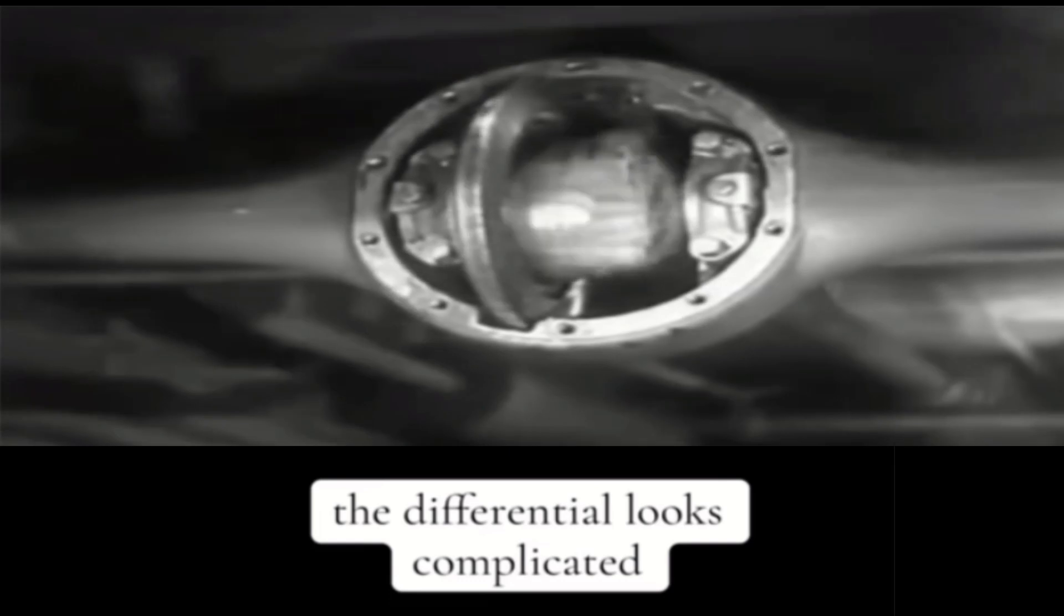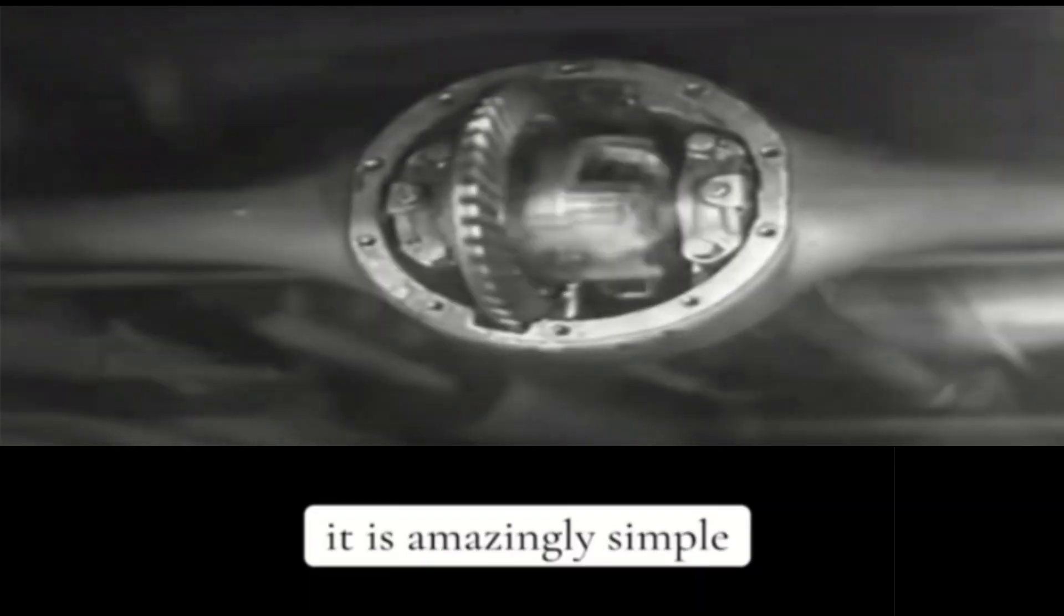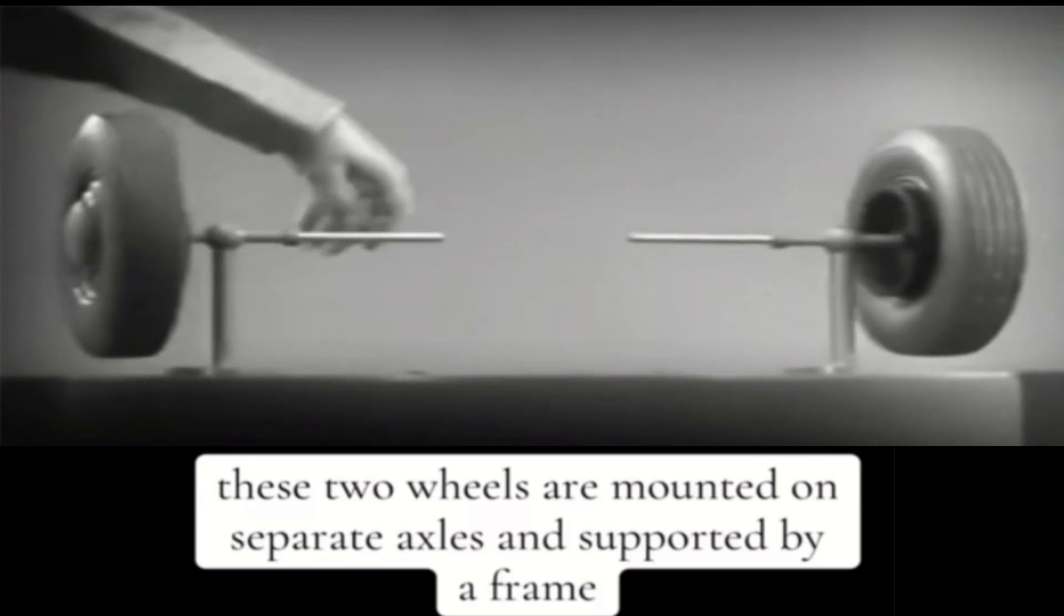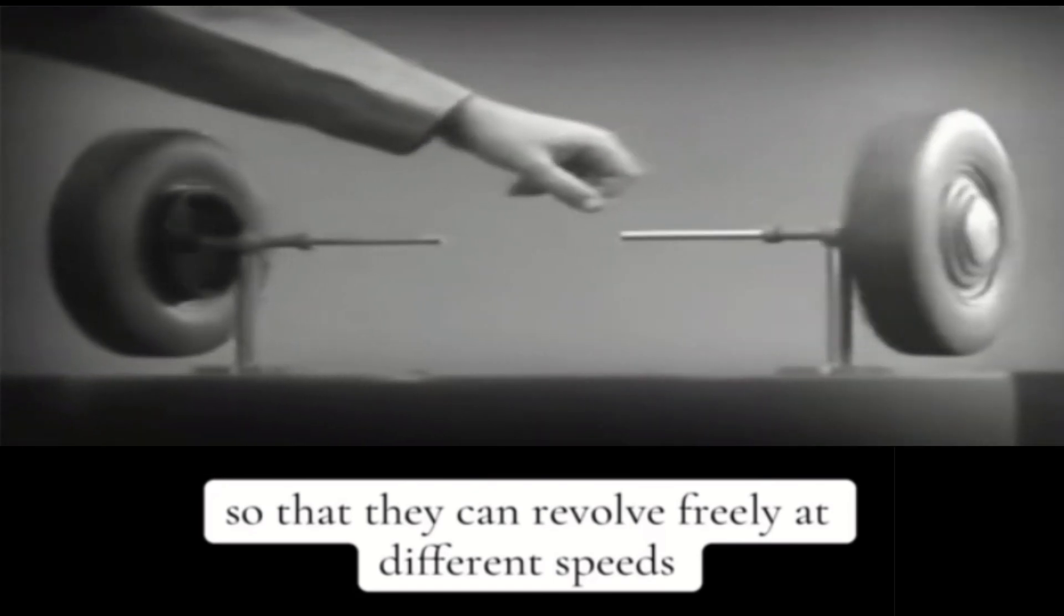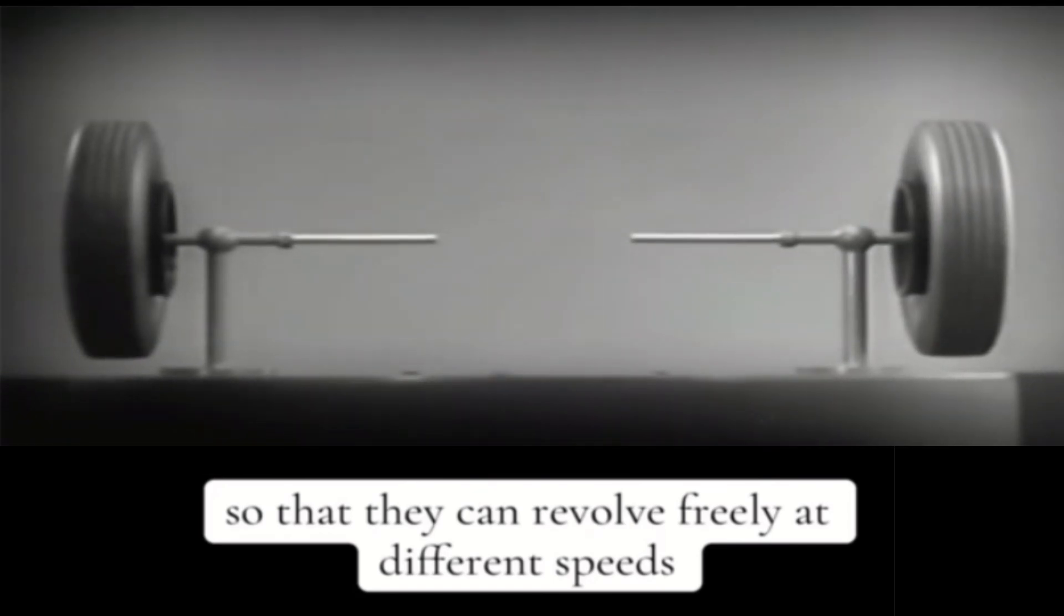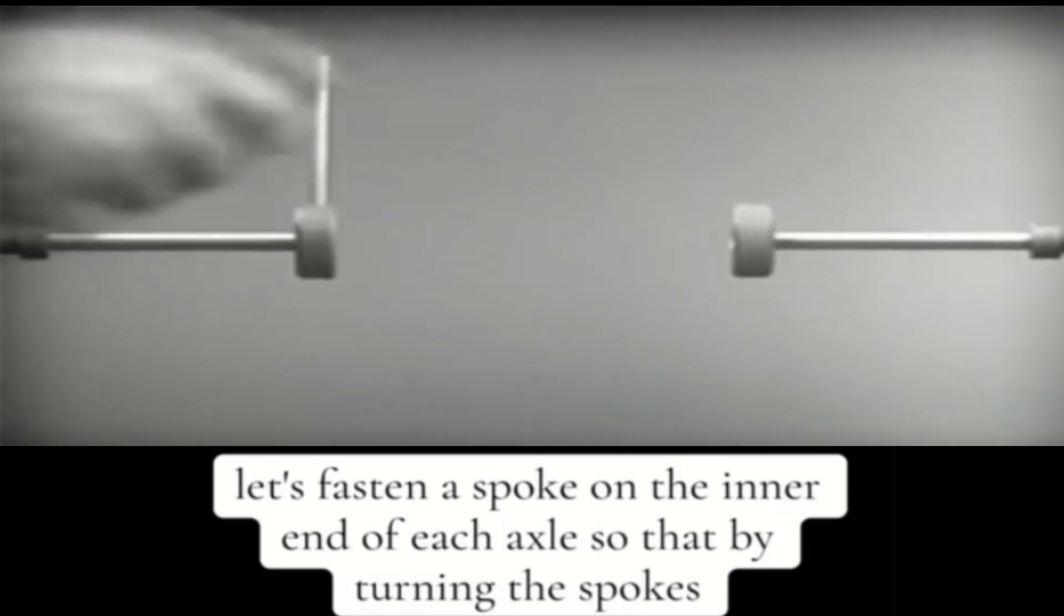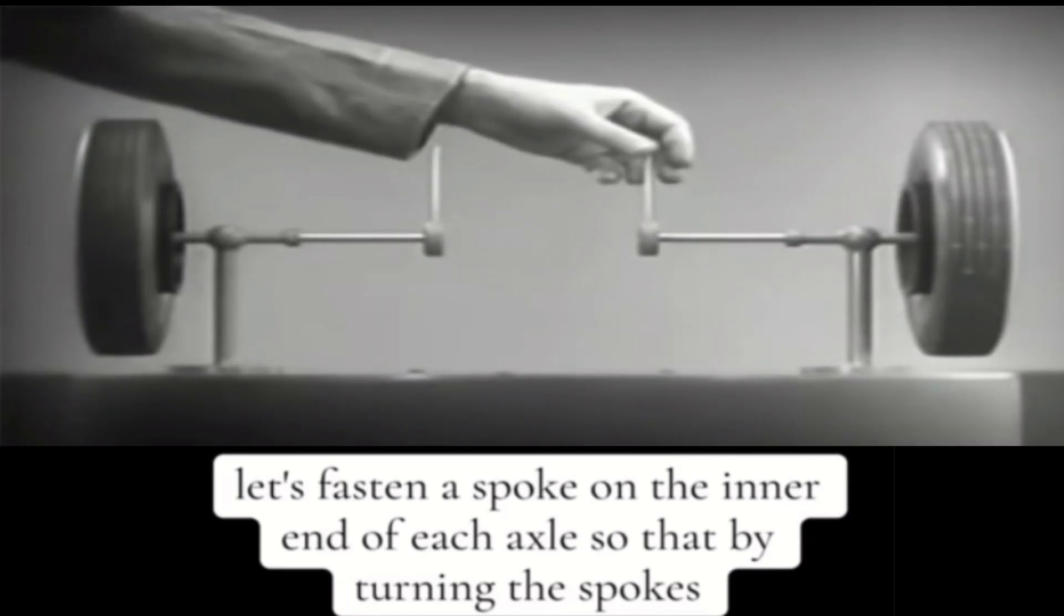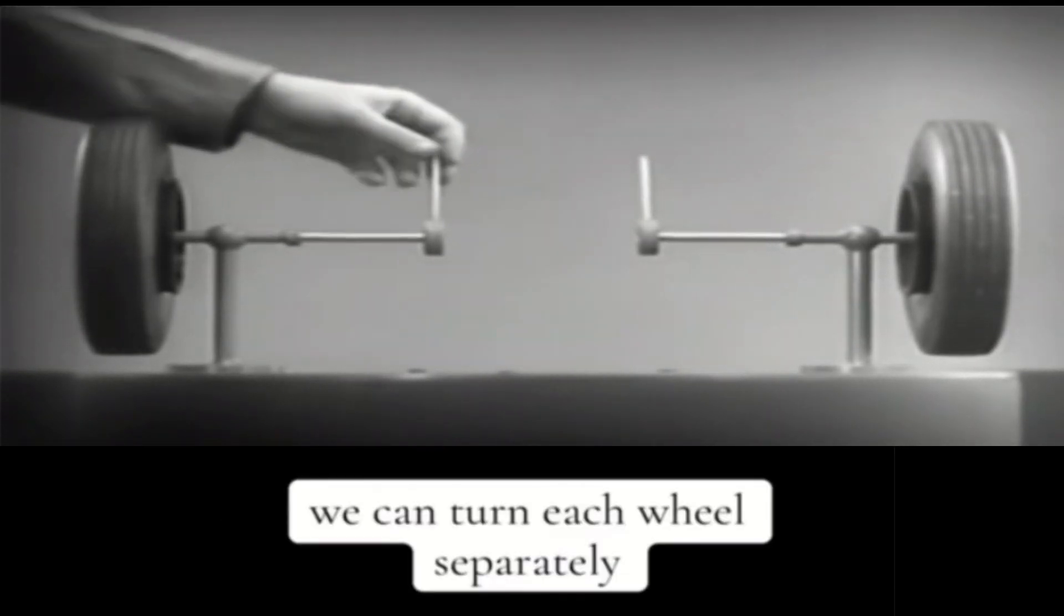The differential looks complicated, but once we understand its principle, it is amazingly simple. These two wheels are mounted on separate axles and supported by a frame so that they can revolve freely at different speeds. Let's fasten a spoke on the inner end of each axle so that by turning the spokes, we can turn each wheel separately.